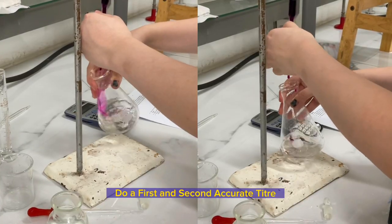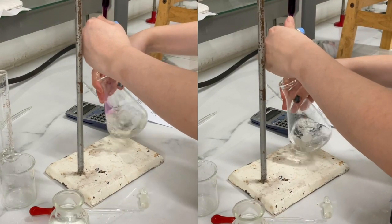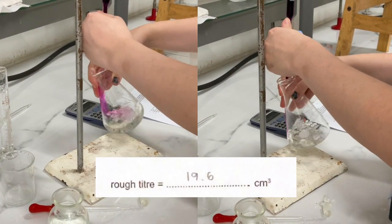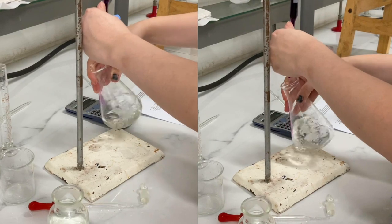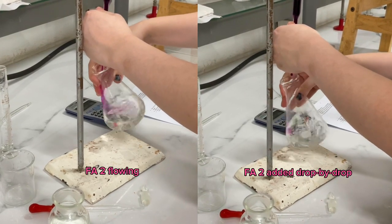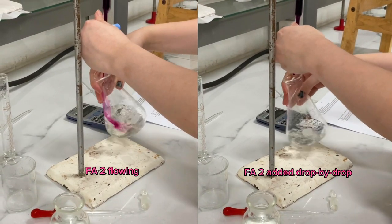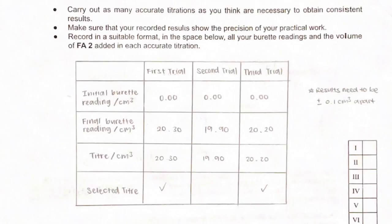Similarly, do a first and second accurate titer. If my rough titer was 19.6 cm³, I would let FA2 flow until 15 cm³, and then FA2 is added drop by drop until I see a color change. These were my results. If the first two accurate titers have a difference of more than 0.2 cm³, it is required to do a third accurate titer.